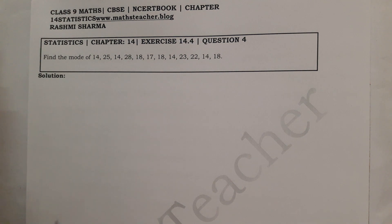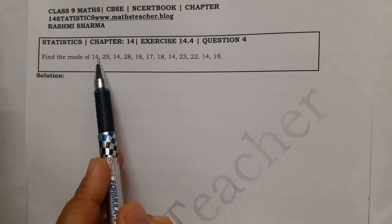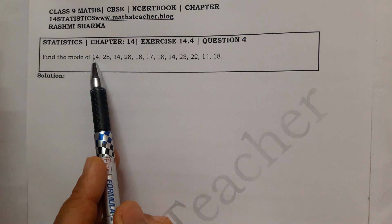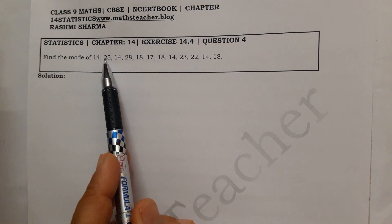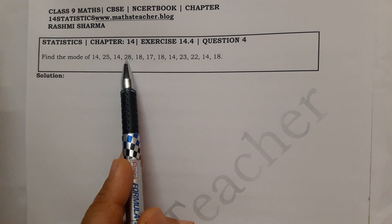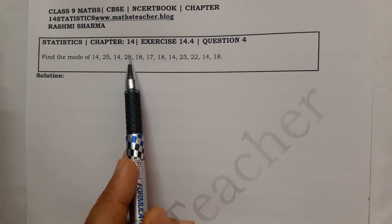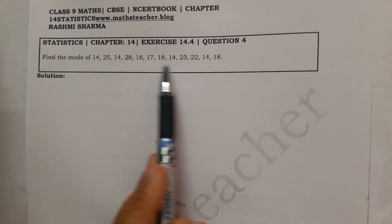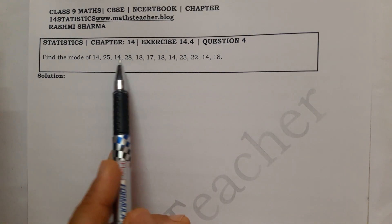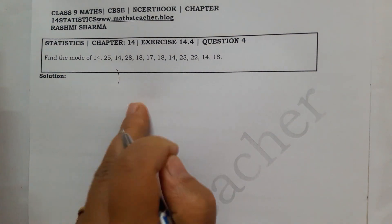Because if you have to write the solution, you have to write the working clearly — you can't just see it directly. If I can see that 14 appears 4 times, 25 appears 1 time, 28 appears 1 time, and 18 appears 3 times, then I think the mode is 14. But we will not write directly that mode equals 14.